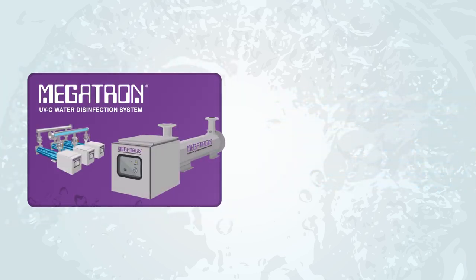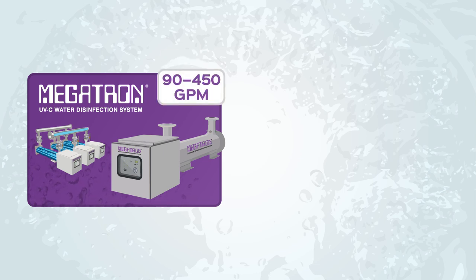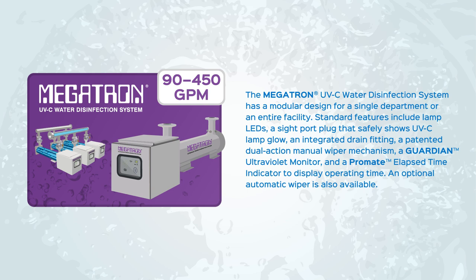Megatron UVC water disinfection system, 90 to 450 GPM. The Megatron has a modular design for a single department or an entire facility. Standard features include lamp LEDs, a sight port plug that safely shows UVC lamp glow, an integrated drain fitting, a patented dual action manual wiper mechanism, a guardian ultraviolet monitor, and a Promate elapsed time indicator to display operating time. An optional automatic wiper is also available.